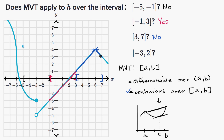You can even see that visually. The slope of the secant line between the endpoints of our interval is shown here. Over the interval, we don't see any point where the instantaneous rate of change — the slope of the tangent line — is equal to the slope of that secant line between the endpoints. So once again, the mean value theorem does not apply.